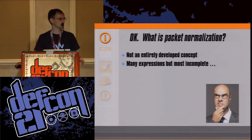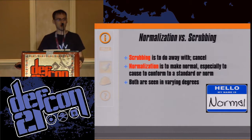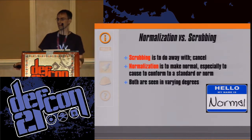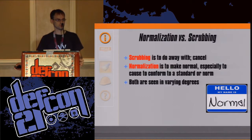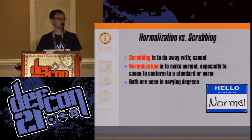I'm going to start by differentiating between normalization and scrubbing. Scrubbing is to do away with — cancel. Normalization is to make normal, especially to cause to conform to a standard or norm. They are often used interchangeably and I believe this is a mistake. Scrubbing — removing parts — really just makes a packet less of itself. It doesn't move it toward a standard. In order to move something toward a standard, you have to reorganize its structure, not unlike what is done in databases.